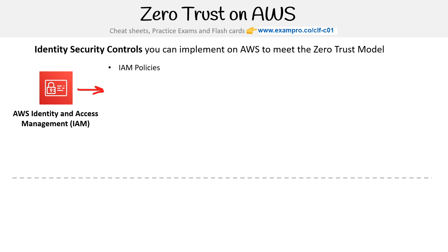Then you have the concept of permission boundaries. These are saying, these aren't the permissions the user has currently, but these are the boundaries to which we want them to have. So they should never have access to ML services, and if someone applies them permissions, it'll always be within these boundaries.